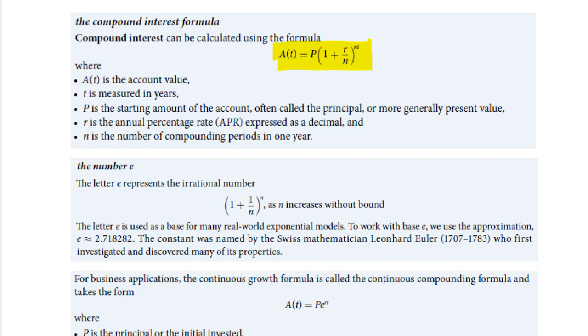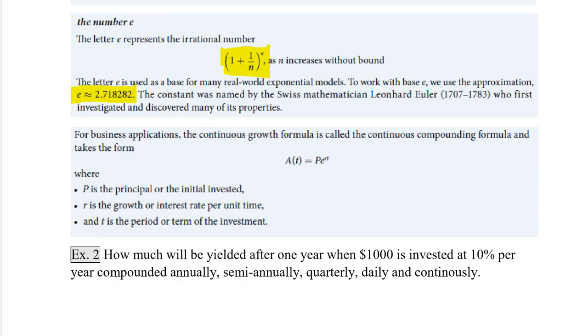We also want to talk about the number e. e represents the irrational number (1 plus 1 over n) to the n as n increases without bound or as n approaches infinity. This is a very special number that winds up being equal to approximately 2.718282, and we have a lot of applications for the number e, particularly in exponential growth and decay problems. So the last formula we want to look at right now is A(t) equals Pe to the rt. Sometimes we call that PERT.